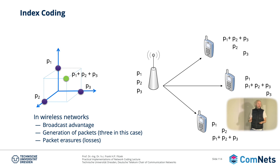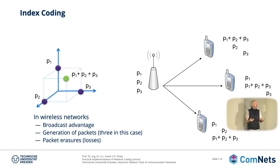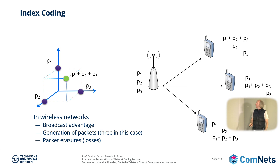So what should you do now? A repetition code means you repeat all three packets — that's not a good idea. But if you look at the coding space, you have three packets: P1, P2, P3. So let's apply the same idea — we make an XOR over all three of them, very simple, and create a combination of all of them.